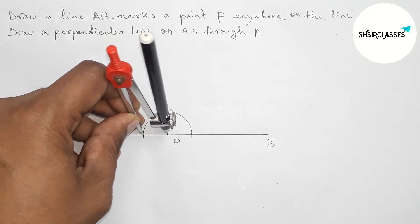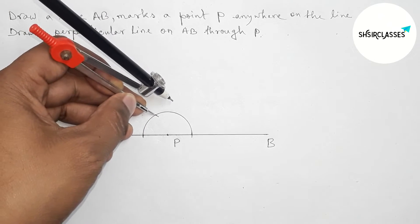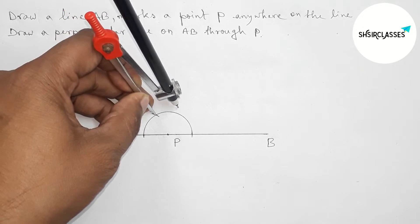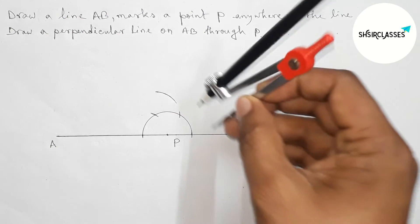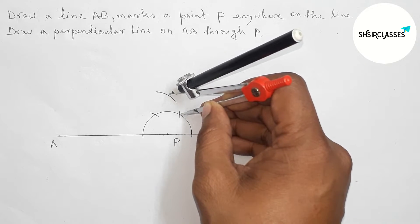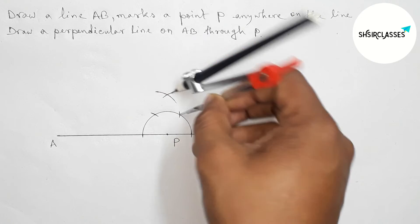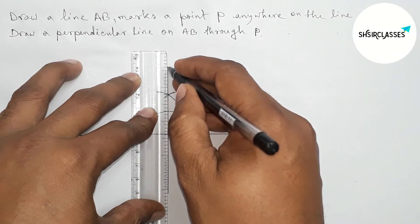Putting the compass here with same length and cut here, drawing an arc here. Again with same length, putting the compass here and now cut here. Next, joining this which passes through point P.